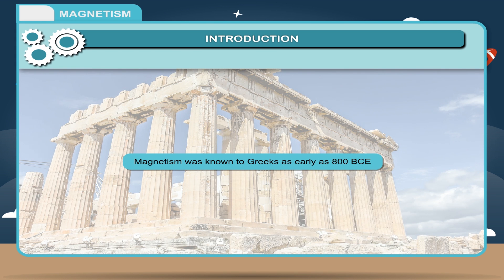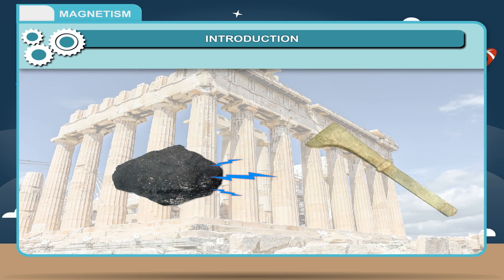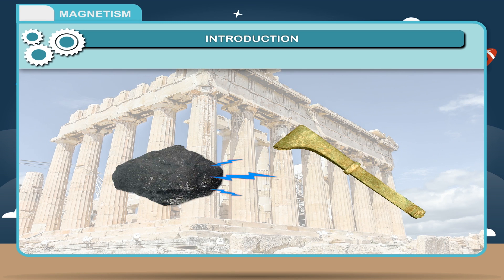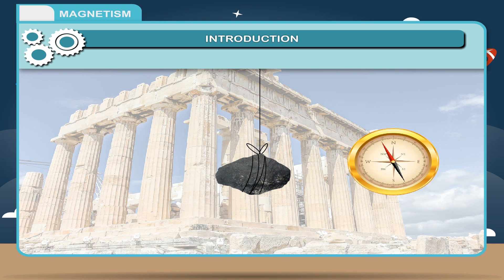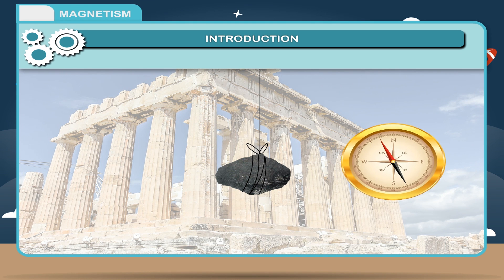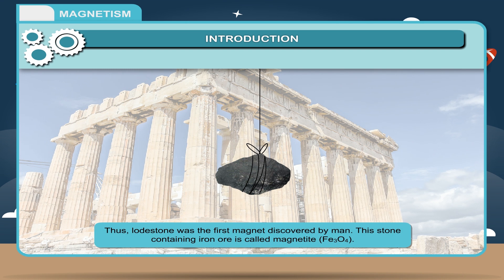Magnetism was known to Greeks as early as 800 BCE. Greeks discovered that certain stones attracted iron objects. When these stones were suspended freely, they came to rest pointing in north-south direction. These stones were called loadstones. Thus, loadstone was the first magnet discovered by man.